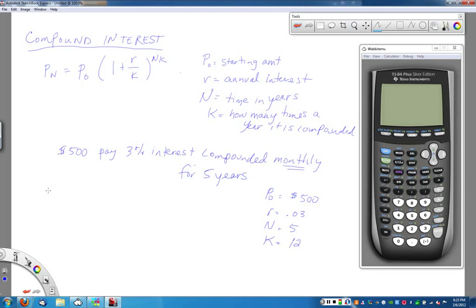At this point it's just a matter of plugging things in the formula. So this says that P of 5, because I'm looking for what the amount of money is five years later, the balance in the account, is going to be equal to my P0, which is $500. Times in parentheses, 1 plus R, which was .03, divided by K, which was 12, all to the N, which is 5, times K, which is 12. And at this point what I want to do is I would like to figure out what this whole number value is.